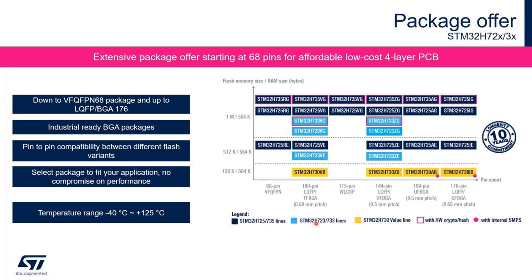The light blue entries are H7-2-3 and H7-3-3 lines — H7-3-3 is with hardware crypto and H7-2-3 is without. The dark blue is H7-2-5 and H7-3-5. The light pink box highlights hardware crypto versus without hardware crypto options. For those needing SMPS for power supply, the red dot indicates internal SMPS. The temperature range supported is from minus 40°C to plus 125°C — covering most industrial applications requiring minus 40 to 85°C and critical applications up to plus 125°C.